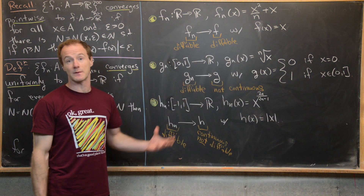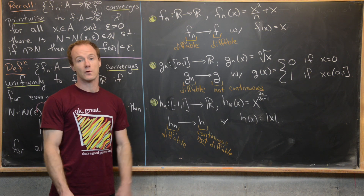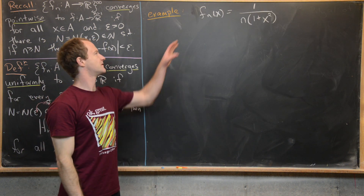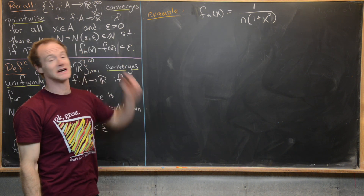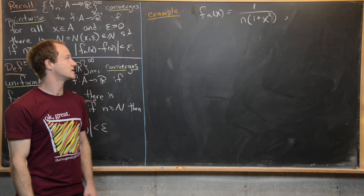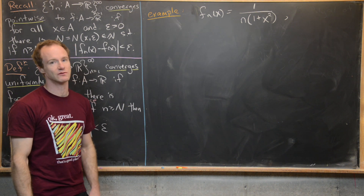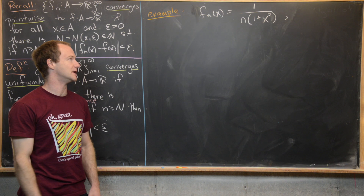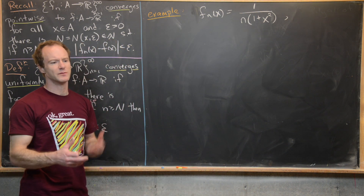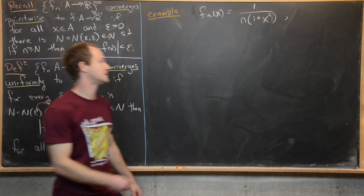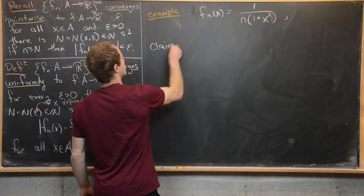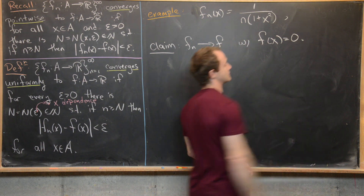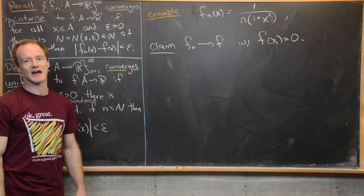For our first example, we look at the sequence f_n(x) = 1 / (n(1 + x²)). It is not too hard to see that this sequence probably limits to the zero function: 1/(1+x²) is bounded, never getting too big, and we divide it by n which goes to infinity. So our claim is that f_n converges to f with f(x) = 0, and let's check whether this is uniform convergence.